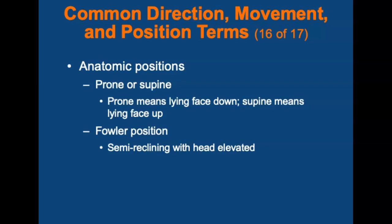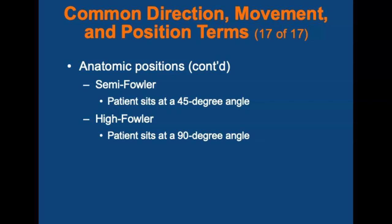There are many terms to describe the position of the patient on arrival or during transport to the emergency department. The body is in the prone position when lying face down, and in the supine position when lying face up. The Fowler position is a semi-reclining position with the head elevated to help the patient breathe easier and control the airway — a patient sitting upright is in the Fowler position. Semi-Fowler position is when the back of the stretcher is at a 45-degree angle, and high Fowler position is when the patient sits at a 90-degree angle.